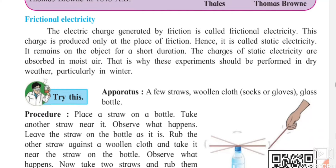Welcome. We have started our eighth lesson on static electricity. We are going to see the next part: frictional electricity. Frictional electricity is the electricity generated when there is friction. The electric charge generated by friction is called frictional electricity. It is not continuous or permanent — it is temporary. This charge is produced only at the place of friction, and hence it is static. Static means only for a few seconds.